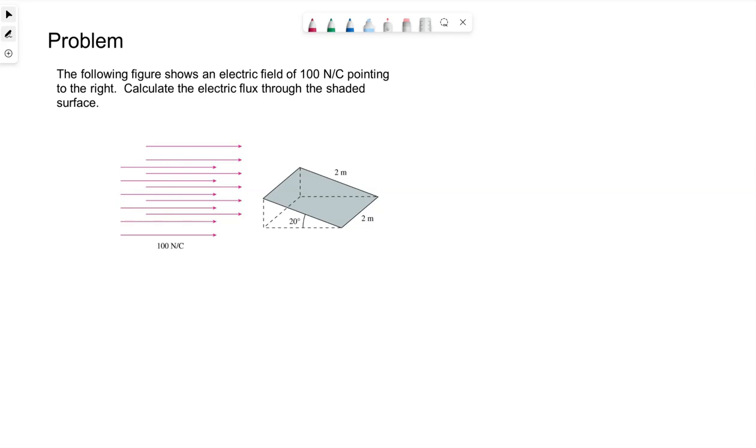We have an example problem here. The following figure shows an electric field of 100 newtons per coulomb pointing to the right. Calculate the electric flux through the shaded surface. So we have a wedge-shaped surface. We're assuming this electric field continues all the way across the screen, just for the sake of making the picture pretty. It only shows on that left side.